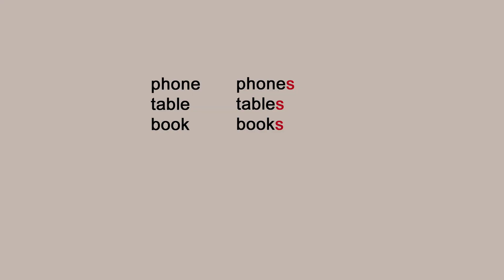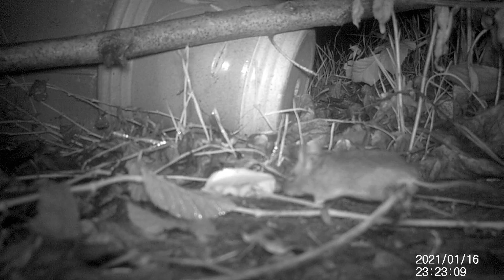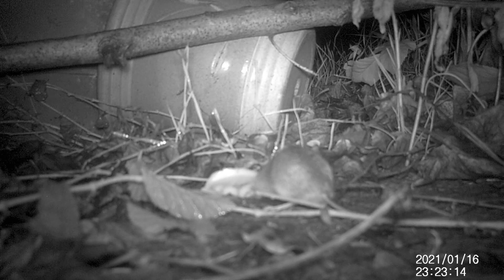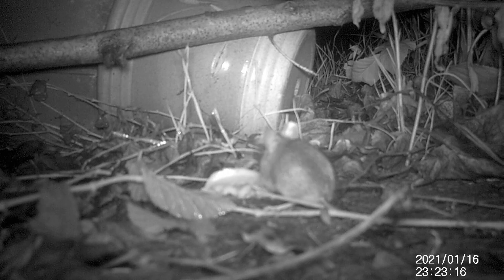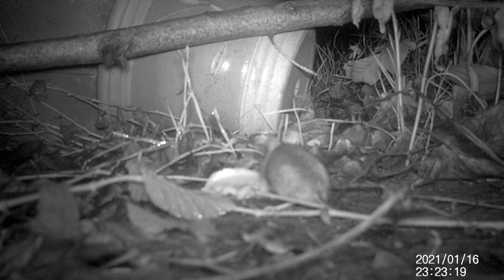Most English plurals nowadays are formed by adding an ending to the root word — phone and phones, table and tables, book and books. The same was true in Old English, but there were more potential endings depending on case and the form the noun had taken in earlier stages. But there are also words where you mark the plural by changing the vowel: a mouse becomes mice, goose becomes geese, man becomes men. It also applies in non-plural situations, like old and elder.